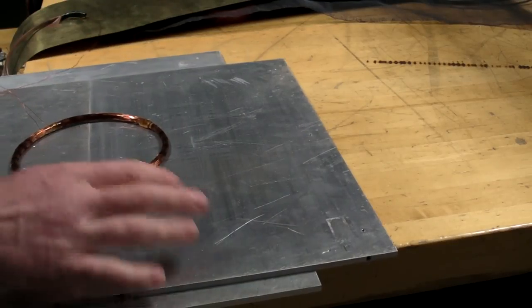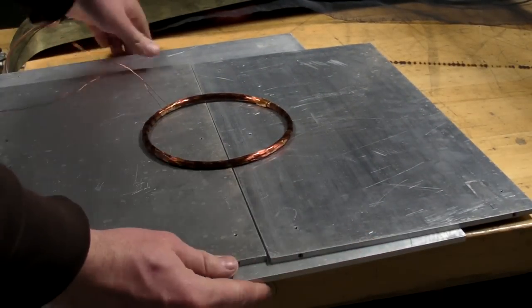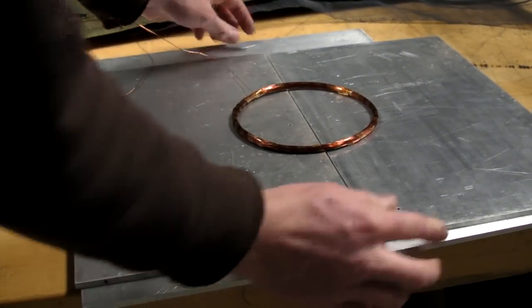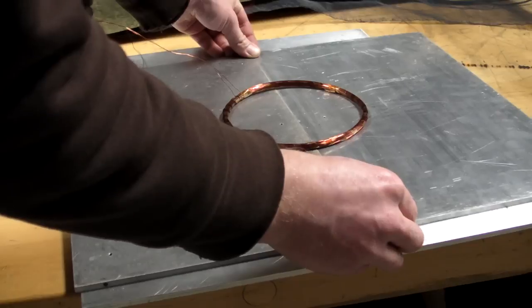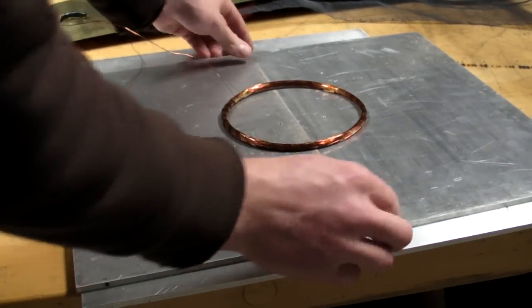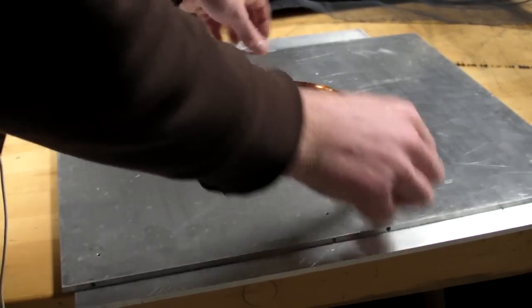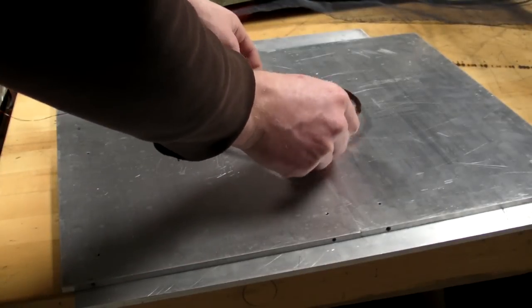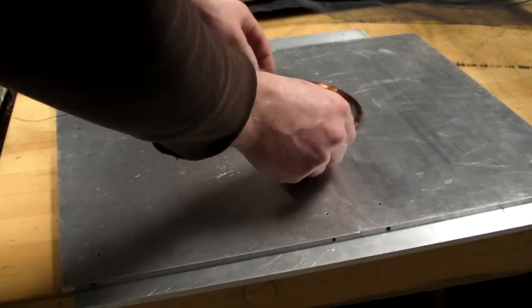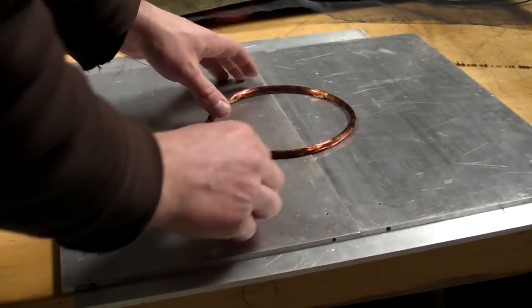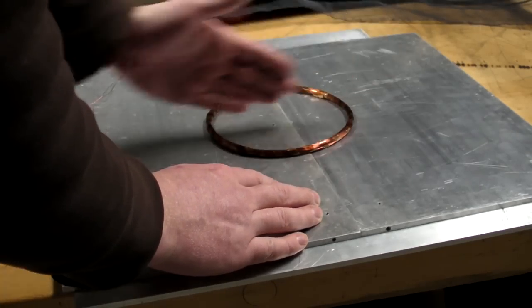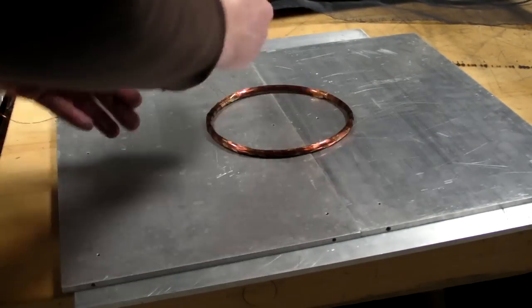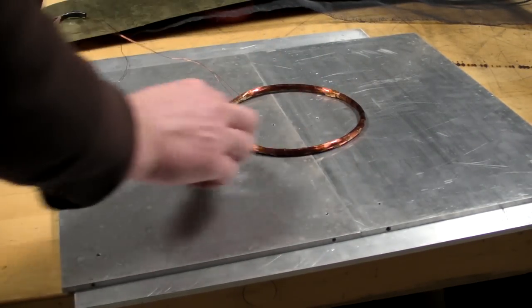We can stack the aluminum plates like so, which gives us extra thickness, therefore extra Lenz's Law activity, more eddy currents going throughout here, so it should levitate a little bit higher. And with one set of edges going this way and one going that way, we're going to have stability right in the middle.